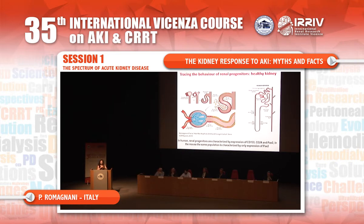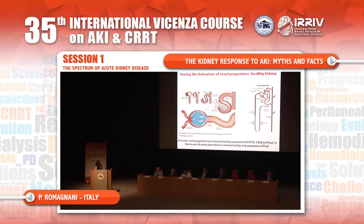This is what happens when we trace all tubular epithelial cells. Now let's see what we observe when we trace only the cells we consider tubular progenitors. This is the model we have described over the years, as have other groups in human. The distribution of these progenitors in human is in the Bowman capsule, with cells deputed mostly to replace podocytes.